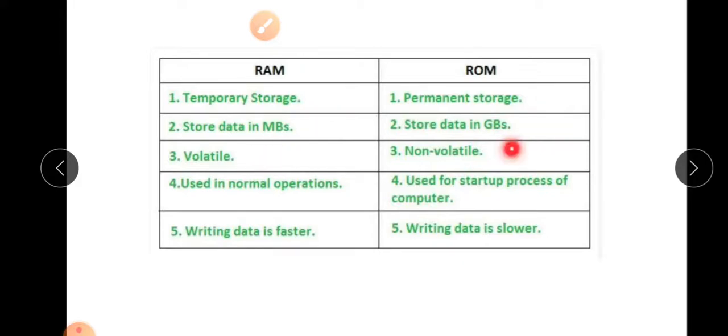RAM is volatile, ROM is non-volatile. RAM used in normal operations and ROM used in the startup process of computer. This is normal operations for our work, the calculations that we have to do, and ROM used in the startup process. Writing data is faster in RAM, writing data is slower in ROM. RAM is fast and ROM is slow.